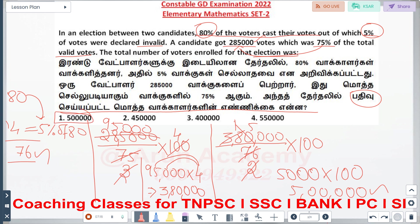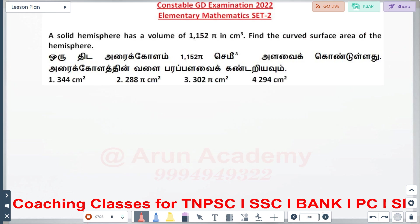If you ask the next question, let me ask the next question. A solid hemisphere has a volume of 1152.5π centimeter cube.